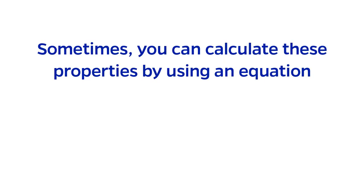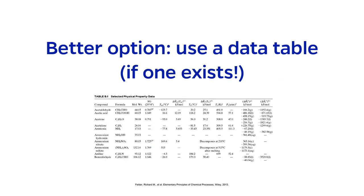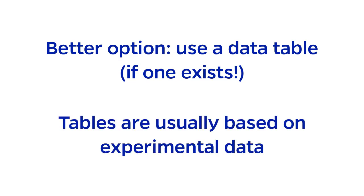Sometimes the values of these physical properties can be calculated using an equation, but usually this is only an approximation. The best course of action in this situation is to use a data table, if one exists. This is because tables are usually based on actual experimental data, which is more accurate than an equation.